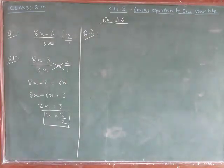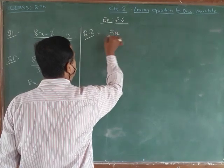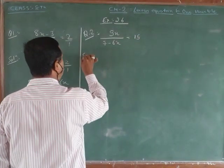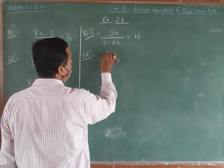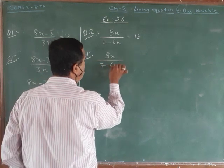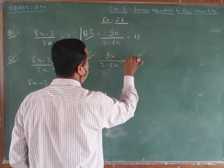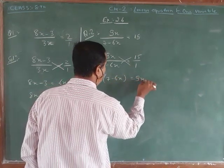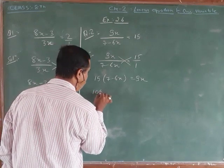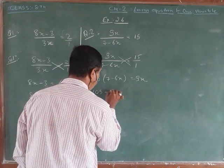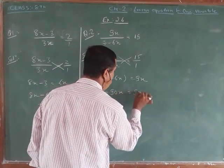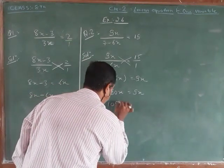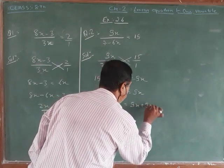Question number 2: 9x upon 7 minus 6x equals 15. Cross multiplying, we get 9x equals 15 times 7 minus 6x, which becomes 9x equals 105 minus 90x. Then 105 equals 9x plus 96x, so 105 equals 99x.